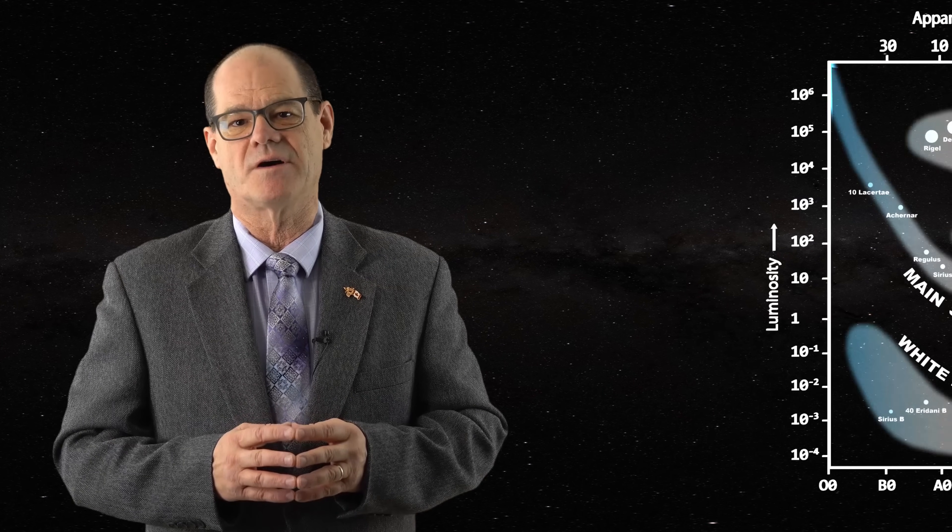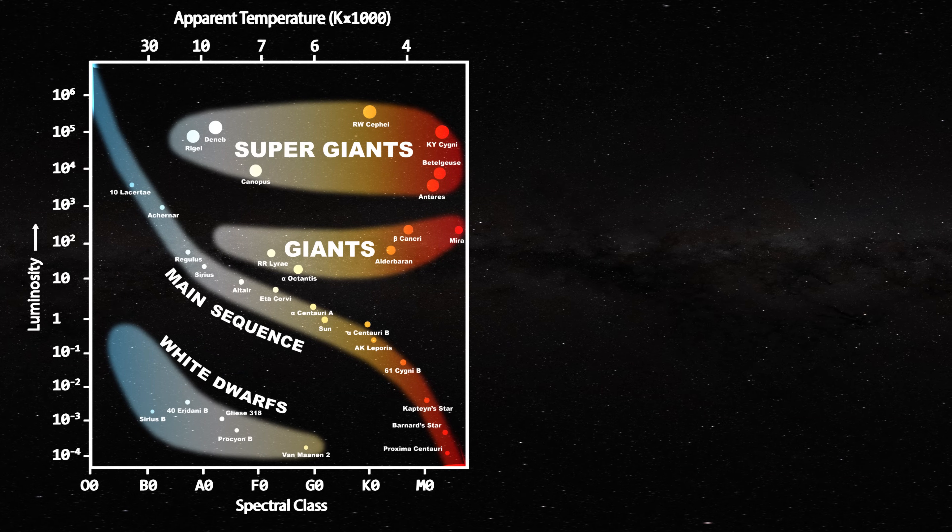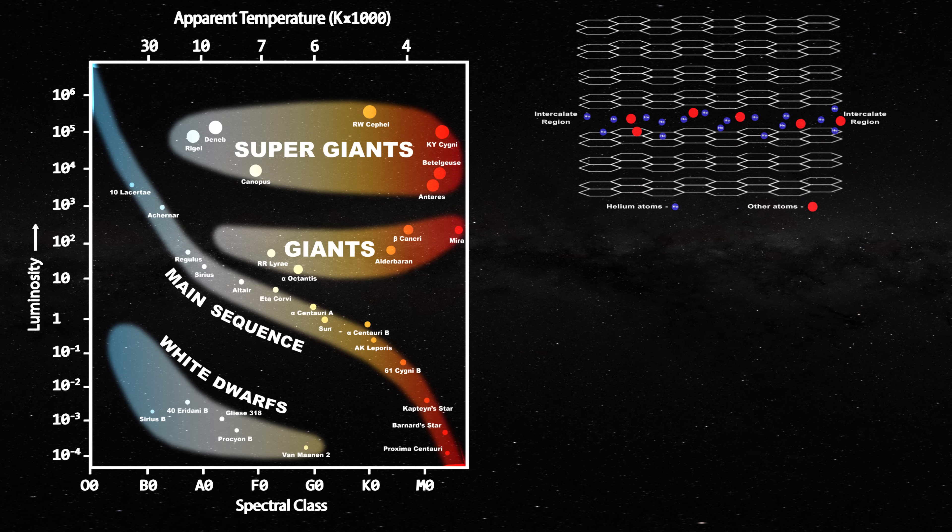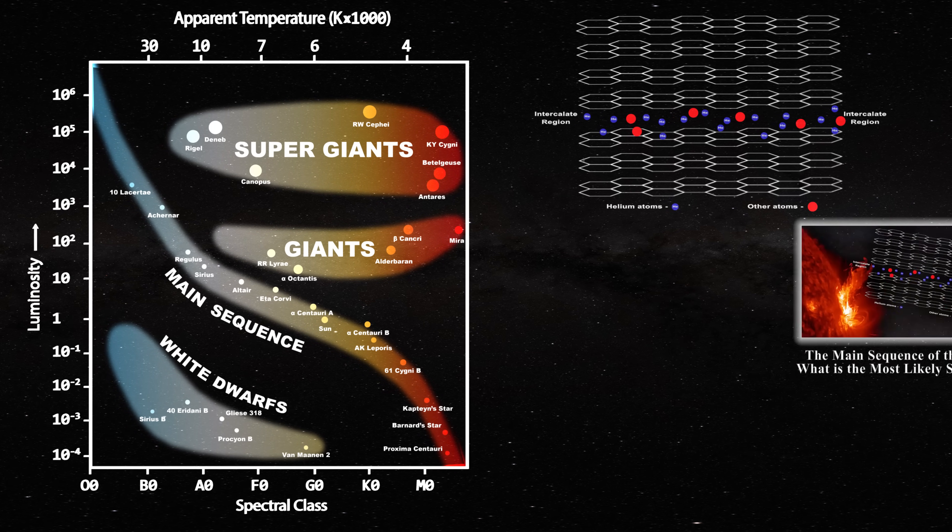In order to place everything in context, let us return once again to the main sequence of the stars. As mentioned previously, the stars on the main sequence share the same lattice structure at the level of their photosphere. The most reasonable candidate for this lattice is hexagonal planar, as we saw in this video.